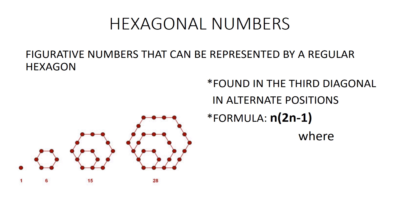Hexagonal numbers. A hexagonal number is a figurative number which represents the number of dots that can be uniformly arranged in a regular hexagon. The sequence is 1, 6, 15, and so on. The general formula is n(2n - 1), where n belongs to natural numbers. These numbers are found on the third diagonal of Pascal's Triangle in alternate positions symmetrically.